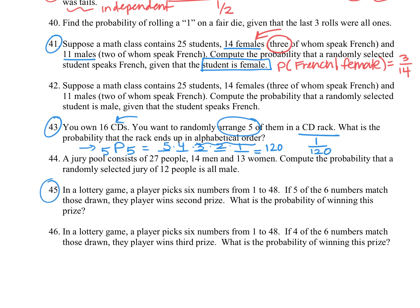For question number 45, we have a lottery game where a player picks six numbers from 1 to 48. Now if five of those six numbers match those drawn, they win second. So we want to know what the probability of winning that second place prize would be.